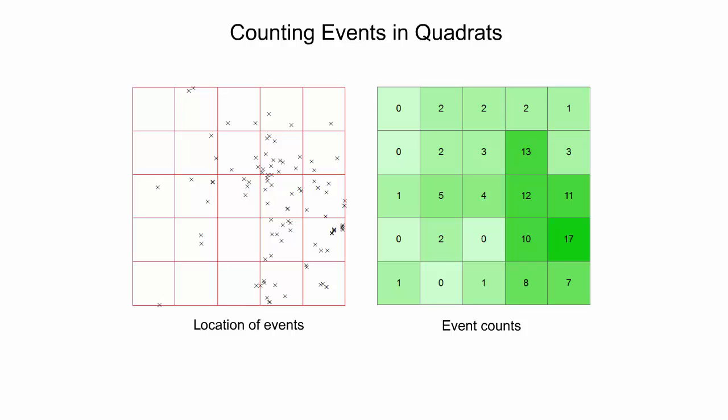This example shows event locations in a study area overlaid with a 5x5 grid consisting of square-shaped quadrats. The quadrats are contiguous, covering the whole study area. The figure to the right shows the number of events observed in each quadrat. The proportion of quadrats with 0, 1, 2, or more events could then be compared to expected proportions based on a Poisson distribution to detect a deviation from complete spatial randomness.